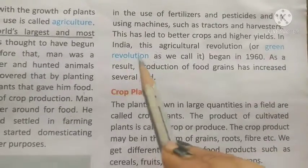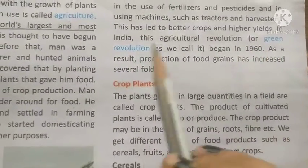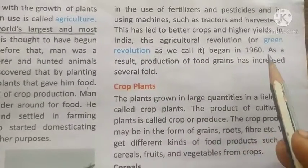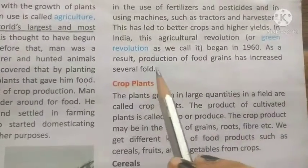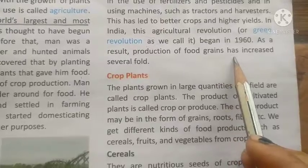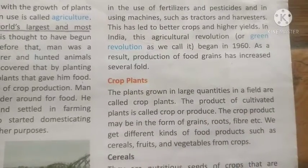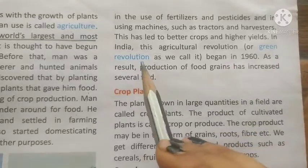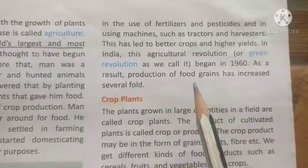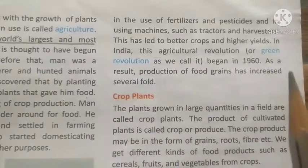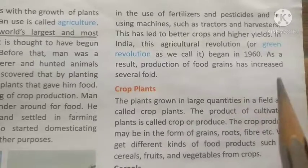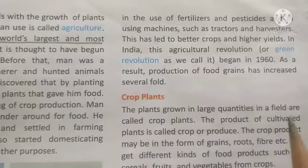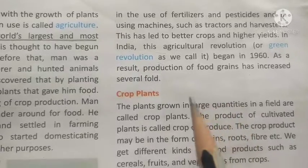In India, this agriculture revolution — also called the green revolution — began in 1960. As a result, production of food grains has increased several fold. The green revolution refers to agriculture-related advances; after 1960, India has seen very good growth in agriculture.